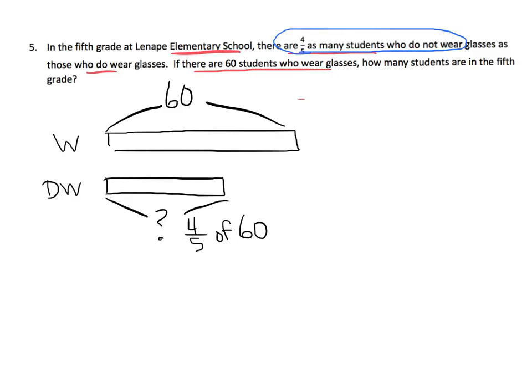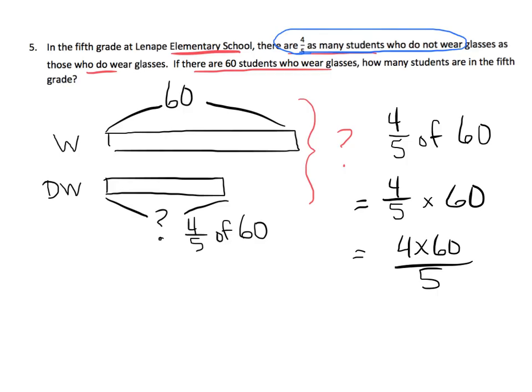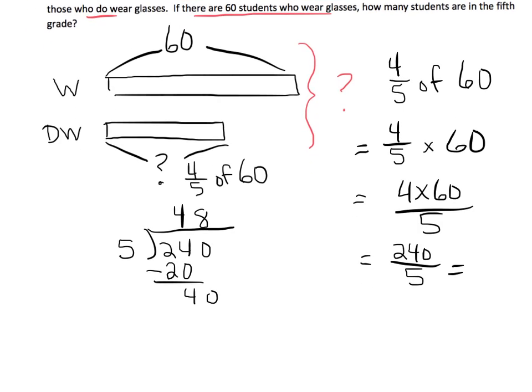And this answer is four-fifths of 60. Then the question is, how many students are there all together? So there's a couple of steps. First, we're going to figure out how many students do not wear glasses. And then we can add them together to get the total. So let's start with that four-fifths of 60. It means 4-fifths times 60, which means 4 times 60 divided by 5. And 4 times 60 is 240 over 5. And 240 divided by 5 is 48. So that's equal to 48.